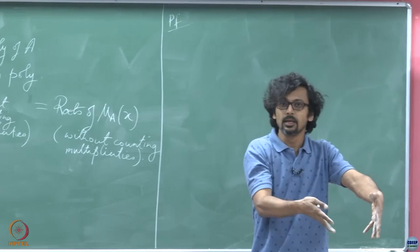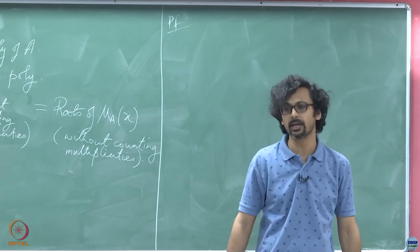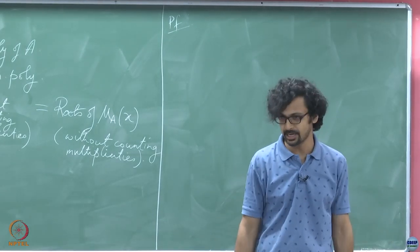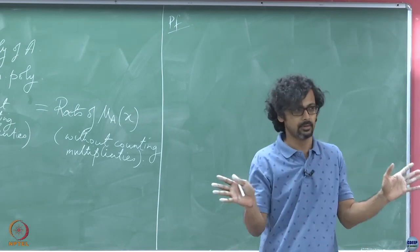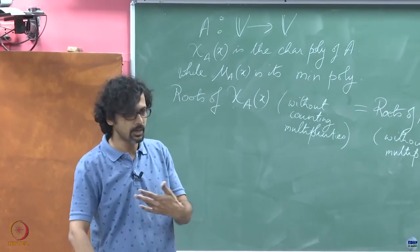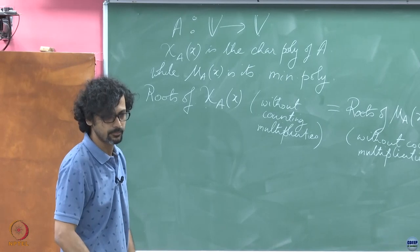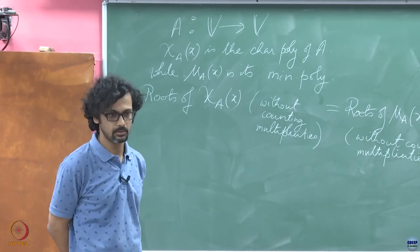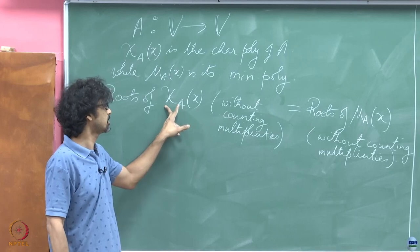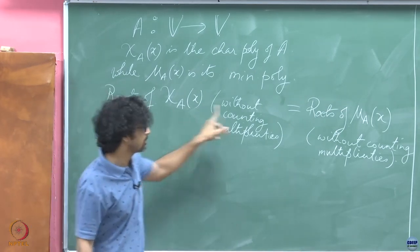If the characteristic polynomial belongs to the annihilating ideal of A, then of course it's got to be divisible by the minimal polynomial. Therefore, the overall degree of the minimal polynomial is at most equal to the degree of the characteristic polynomial and no more than that. We will see this very transparently once we get to Jordan canonical form.